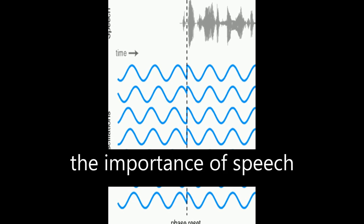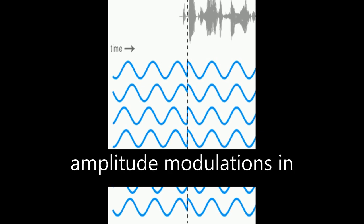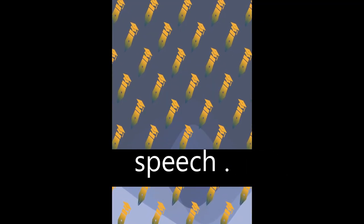The article discusses the importance of speech rhythm and how it is conveyed through amplitude modulations in the slow rhythmic information contained in speech.